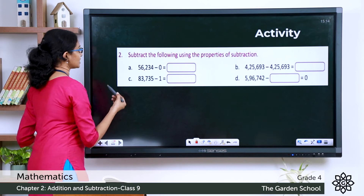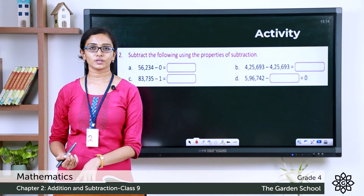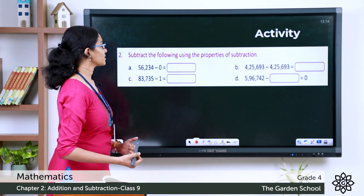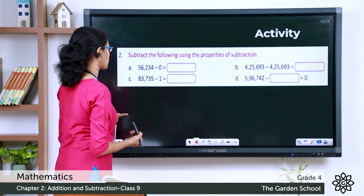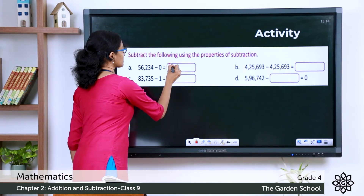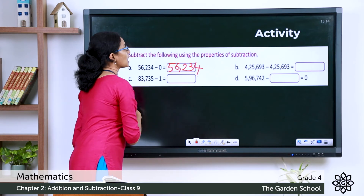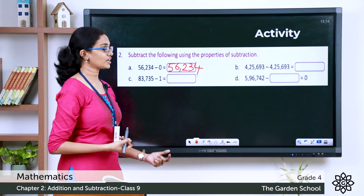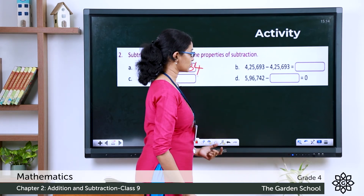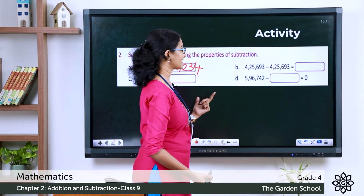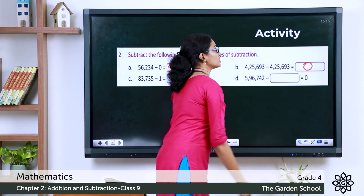Now let's move on to question number two — subtract the following using the properties of subtraction. Question A: 56,234 minus 0. Any number minus 0 gives you the number itself, so the answer is 56,234. Question B: 4,25,693 minus 4,25,693. A number minus itself gives 0.